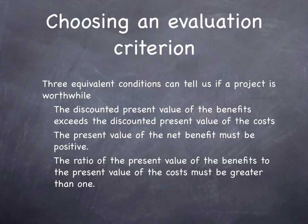The evaluation criterion is that the discounted present value of benefits must be higher than the discounted present value of costs, or the benefit-cost ratio must be greater than one. Some people look at the net benefit-cost ratio — benefits minus costs divided by costs — which must be greater than zero. But you don't get the same ranking from net present value as from benefit-cost ratio. A big project always has a higher net present value than a small project, but a small project might have a higher benefit-cost ratio, meaning a higher rate of return — and that's what you want to maximize.